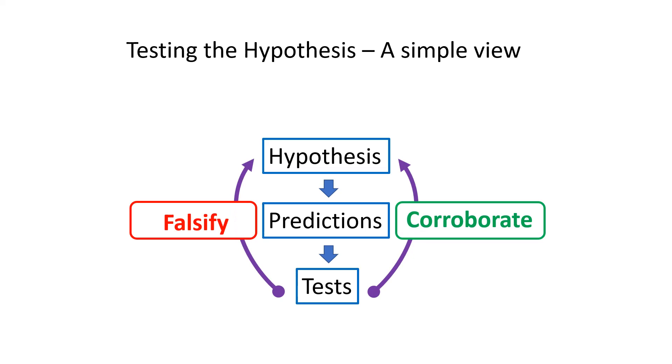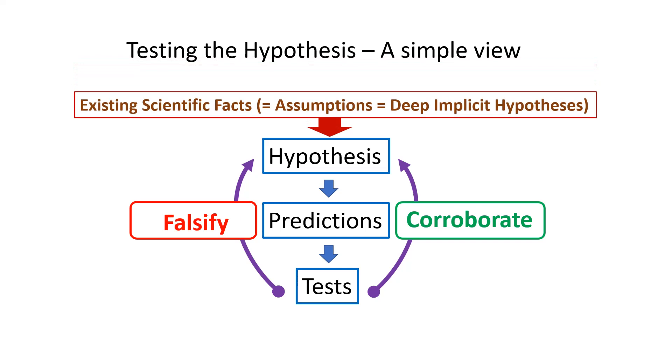But if we think about it, we know this really can't be the whole story because all hypotheses depend on existing scientific facts. These are things that are assumed to be true, they constitute our background knowledge, or what I've been calling deep implicit hypotheses. This means that any hypothesis depends in turn on other hypotheses.